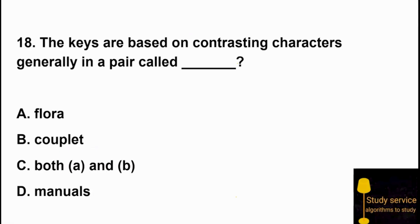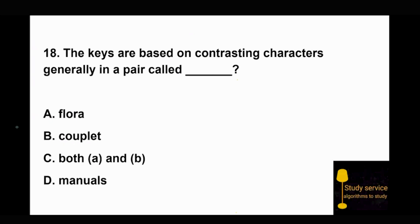Question 18: The keys are based on contrasting characters, generally in pairs called couplets. Option B is the right answer — the contrasting characters in a key are called couplets. Question 19 also asks about contrasting characters present in couplets — Option B, couplet, is the right answer.